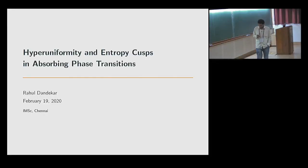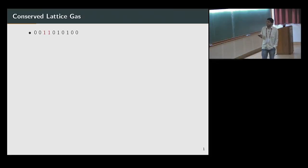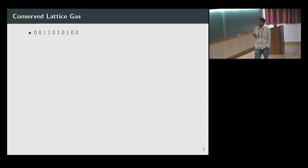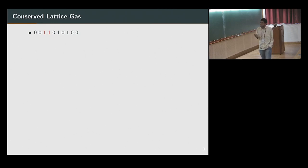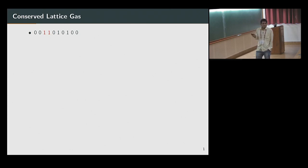Good morning. So let's jump right in. We are considering a lattice gas in one dimension, where each site can have at most one particle. In a given configuration, zeroes denote empty sites and ones denote sites with a particle. Isolated particles are called inactive, and particles which have an occupied neighbor are called active. So these two particles are active; all the others are inactive.